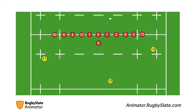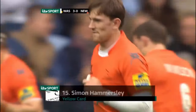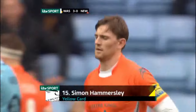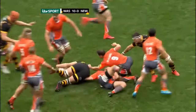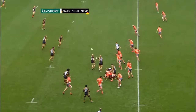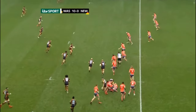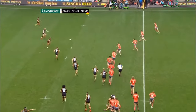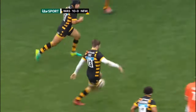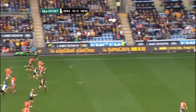To understand why the back three should do this, it's best to look at what happens if they don't, like in this example where Newcastle have their full back binned. There's no player sweeping in the backfield covering where the ball is, so even though the wingers have good positioning, the ball gets spread wide and chipped over the top into the wide open space.